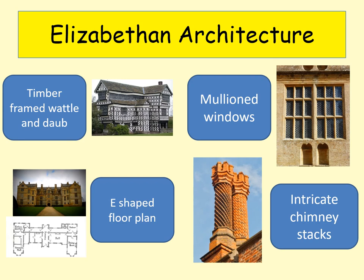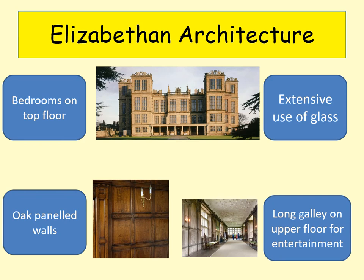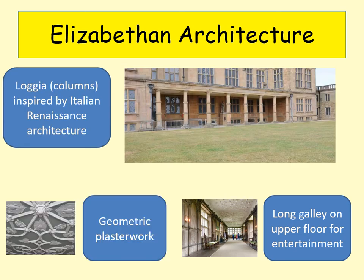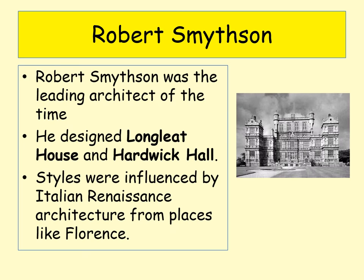Key features of Elizabethan architecture include E-shaped floor plans — a tribute to Elizabeth. There's the timber-framed wattle and daub, giving that distinctive black-and-white pattern, mullioned windows with lead lattice work, and very intricate, often tall chimney stacks. Upper floors have bedrooms, extensive use of glass, long galleries, oak-panelled walls, the loggia, and geometric plasterwork. One of the most famous architects of the era was Robert Smithson, who designed Longleat House and Hardwick Hall — very much influenced by the Italian Renaissance and places like Florence.